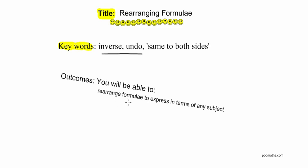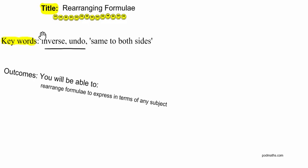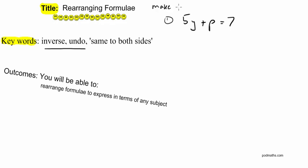The outcome for this lesson is you'll be able to rearrange formulae to express in terms of any given subject. I'll start off with a straightforward little example and build up to some slightly more challenging ones. Here's example number one: 5y plus p equals 7. In this example, I want to make y the subject.